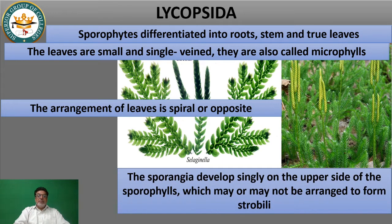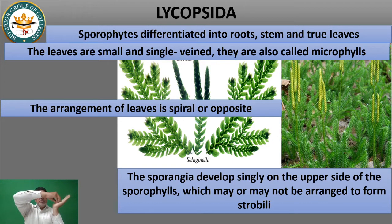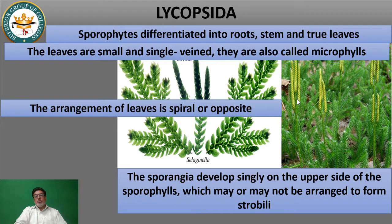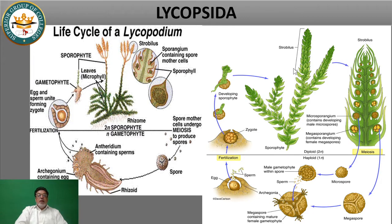This structure is a strobilus, because the sporangia are on the tip and the leaves are present. On the upper side, this is a microphyll, and this is the sporangia present. The sporangia may or may not form a strobilus, which is compactly arranged on the tip of the plant. However, in most members of Lycopsida, a strobilus is present.